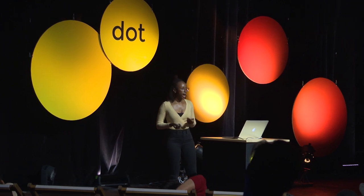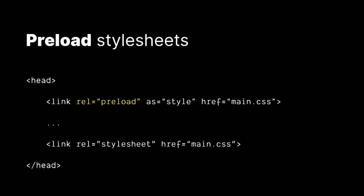Finally, we have preloading stylesheets. This is where we use a special preload link to let the browser know that a resource is going to be needed, allowing the browser to start fetching resources early in the page lifecycle. When we specify the 'as' attribute, it allows the browser to make certain optimizations based on the particular resource type — so in this scenario it's a stylesheet, but it could also be a script or anything else.